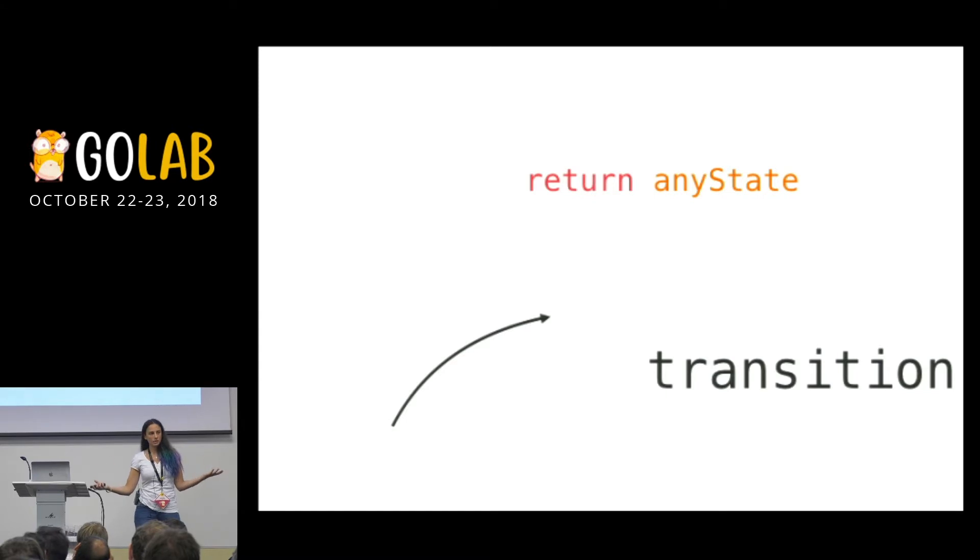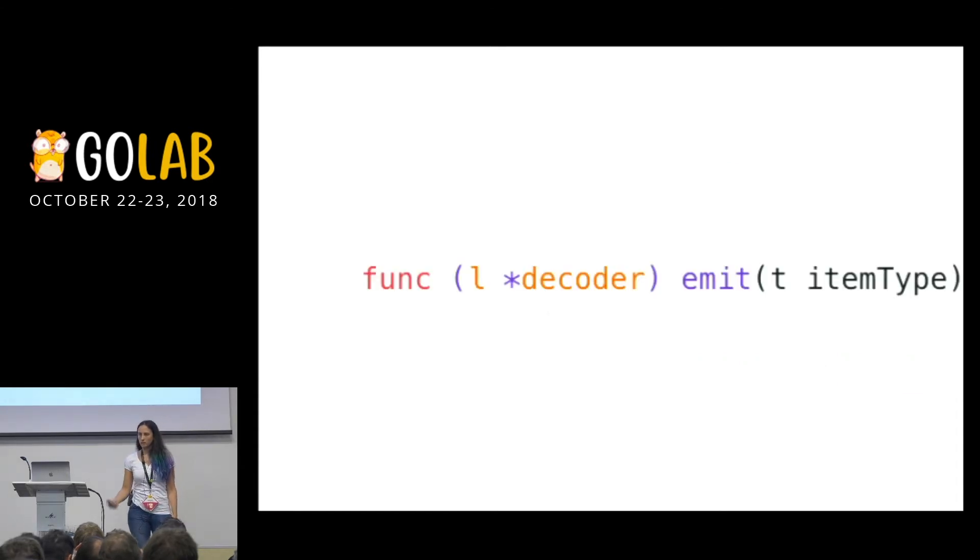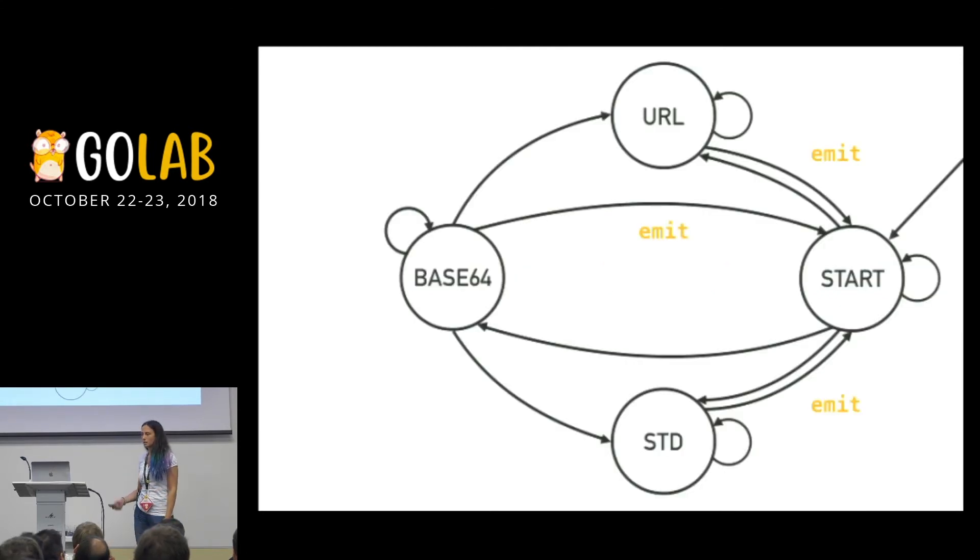On top of all of these switch cases and states, we need some functions to actually do the hard work. We have the main one, we called it emit. And it basically decodes the chunk that you just parsed. If it's an invalid chunk, you just emit a series of invalid characters in the output. And you call that for every arrow that enters the start state before returning the state in the switch case.